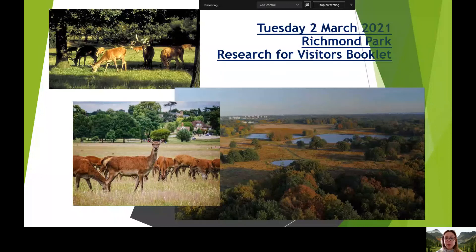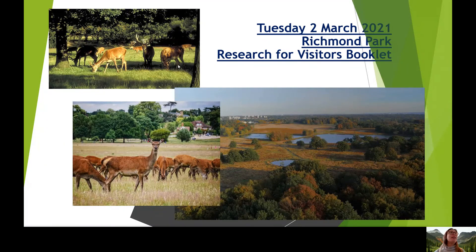Hello Year Six, and welcome to today's geography lesson. Today we are going to be learning all about Richmond Park, which is this beautiful park in South West London. Here we see some pictures of it — we can see deer, beautiful lakes, ponds, trees and forests, and hopefully one day you can visit this park and you'll know all about it.